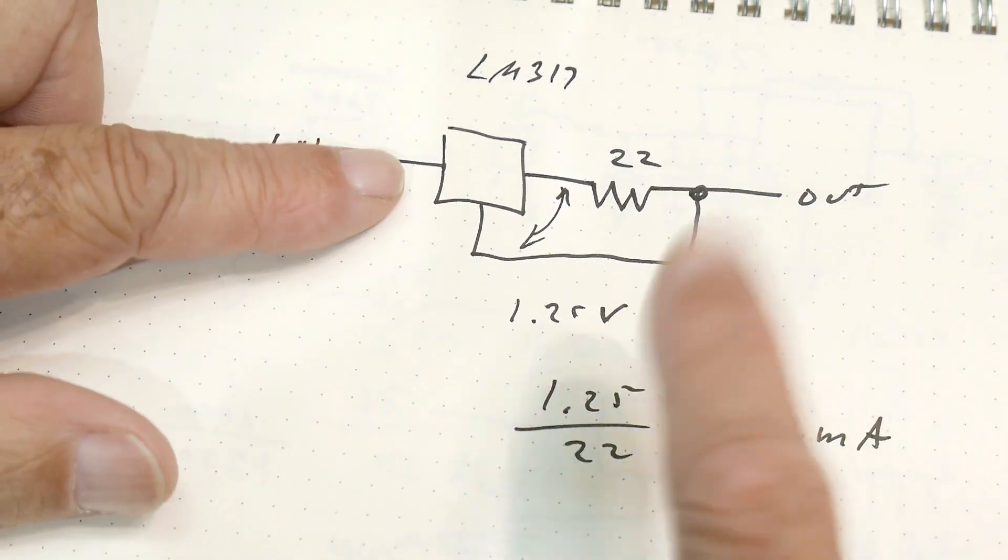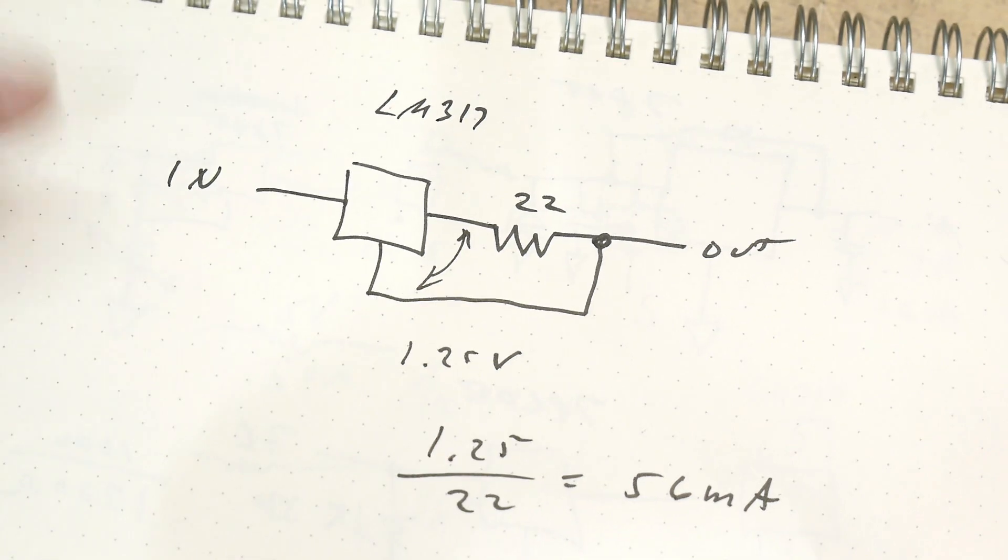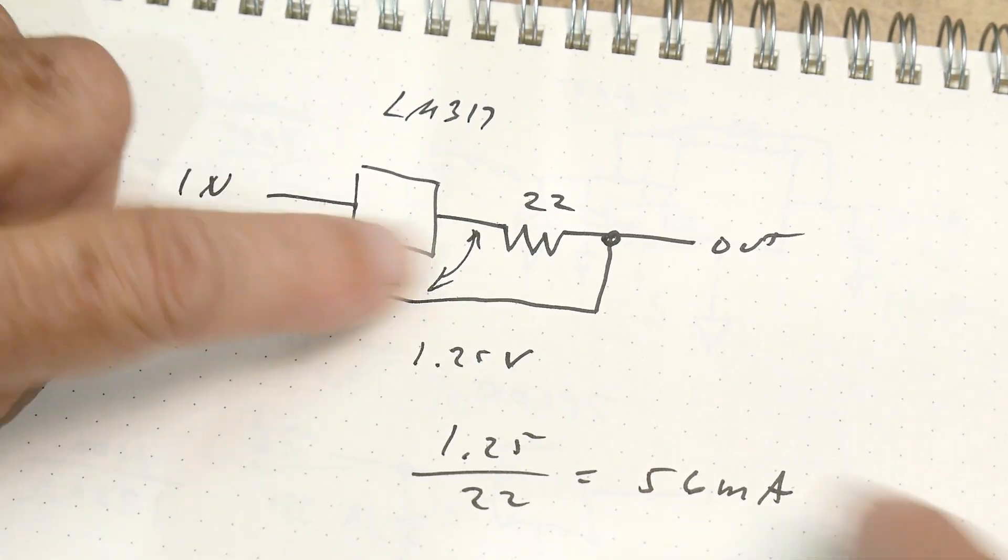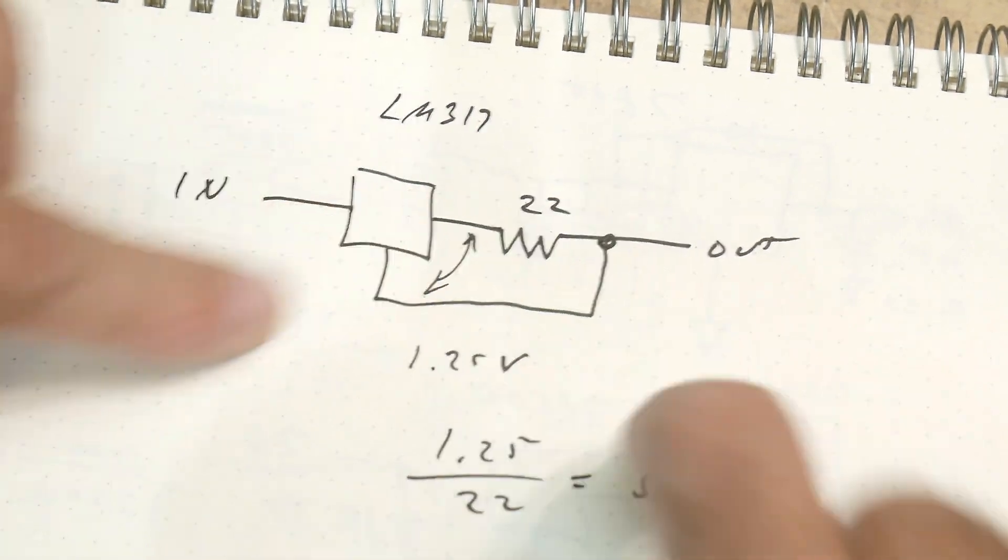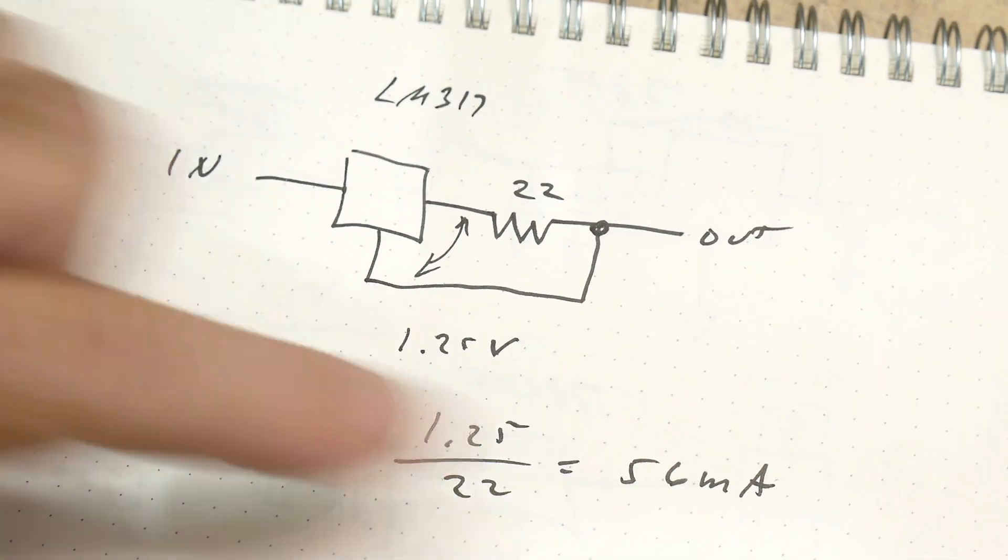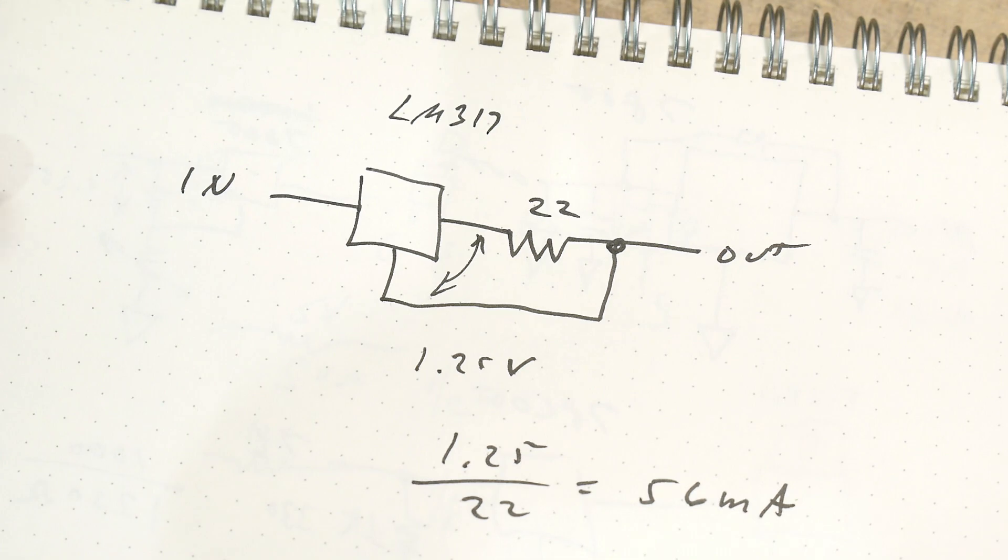And this is a constant current. No matter what the input is, it will always generate 1.25 volts across this resistor and it will always generate 56 milliamps. So let's do that one.